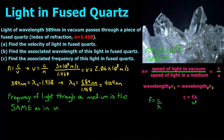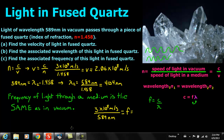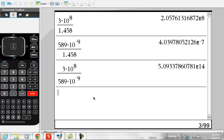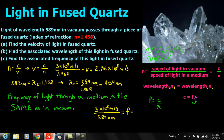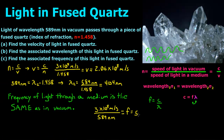The frequency of light through a medium is the same as in vacuum. So once you know that, it becomes simple. You just take 3 times 10 to the 8th meters per second and divide it by the original wavelength of 589 nanometers, and that gives you the frequency — the same frequency. When we do that, we get a frequency of 5.09 times 10 to the 14th hertz.